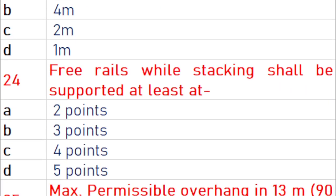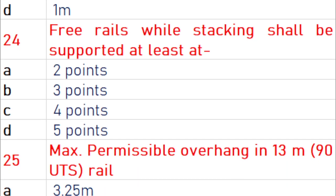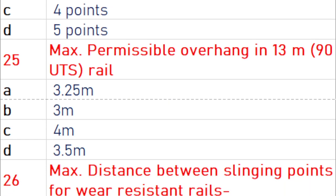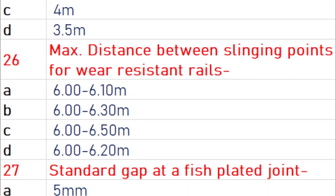Free rails while stacking shall be supported at least at 4 points. Maximum permissible overhang in a 13 m 90 UTS rail is 3.25 m.